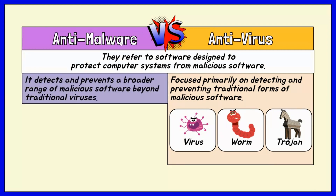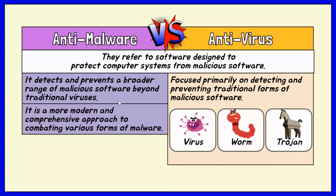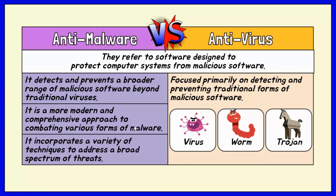On the other hand, the scope of anti-malware includes a broader range of malicious software beyond traditional viruses. It is a more modern and comprehensive approach to combating various forms of malware, including viruses, worms, spyware, adware, ransomware, and other types of malicious code. The key takeaway is that both anti-virus and anti-malware software aim to protect systems from malicious software, and modern solutions often incorporate a variety of techniques to address a broad spectrum of threats.